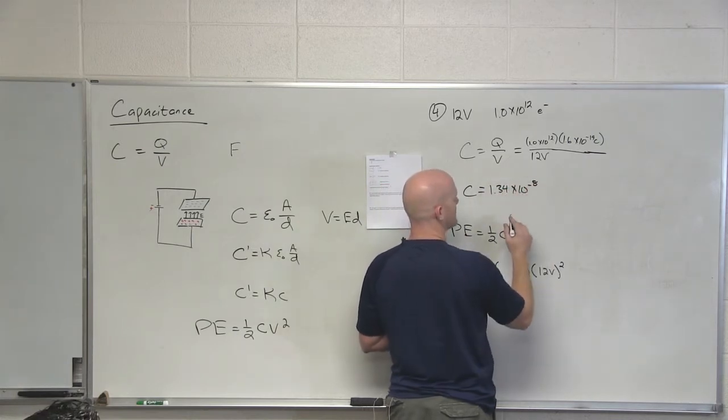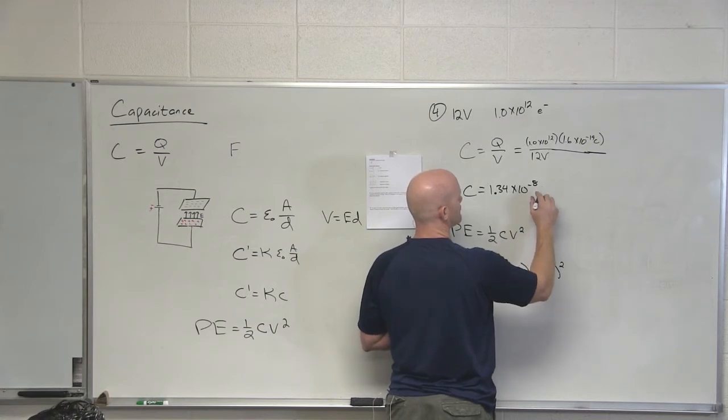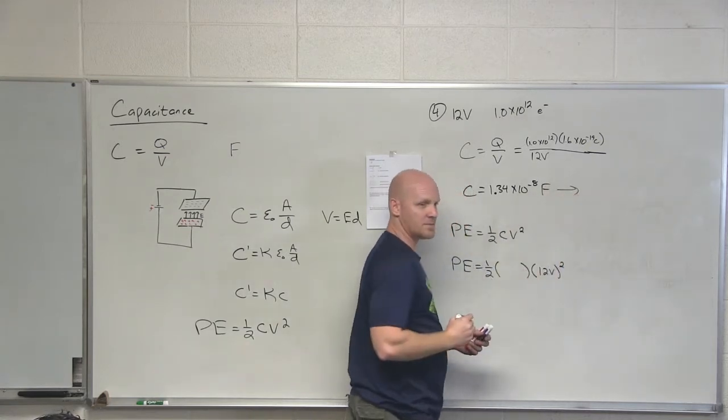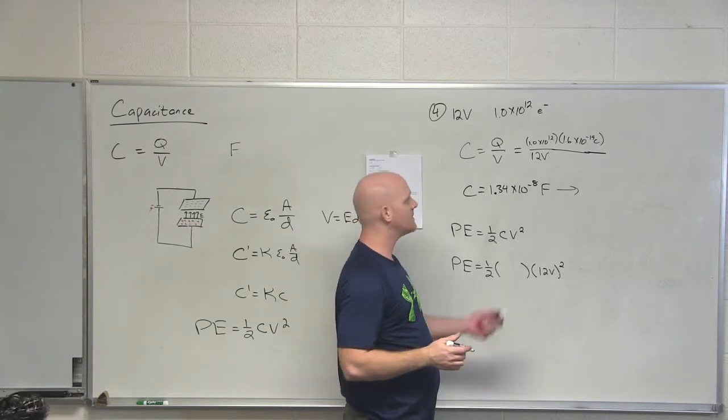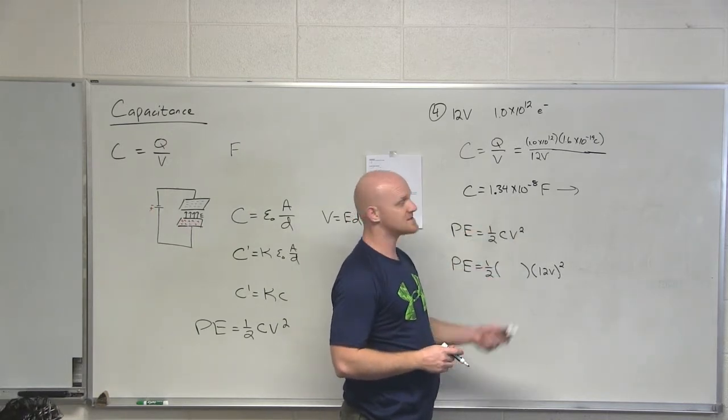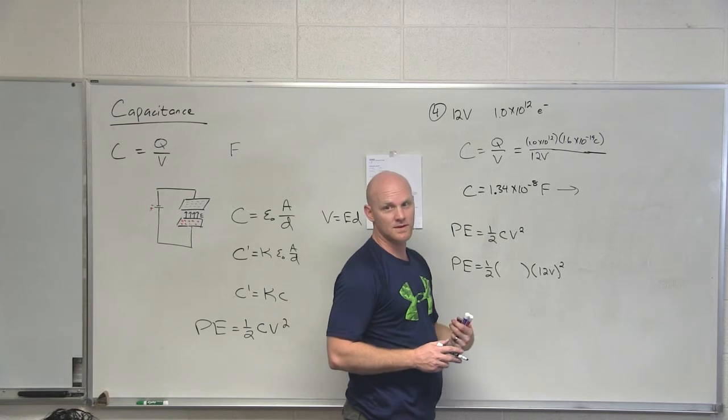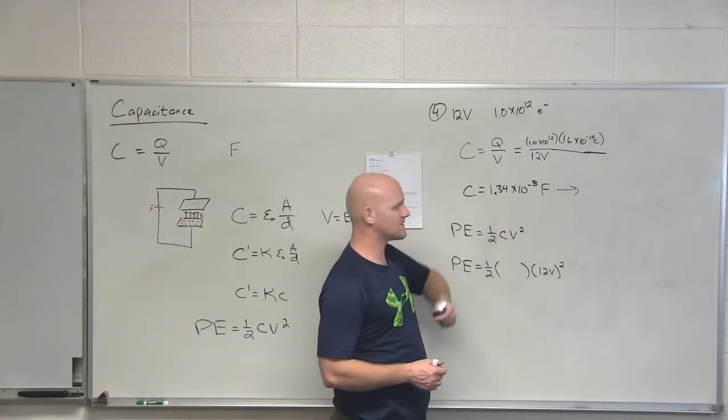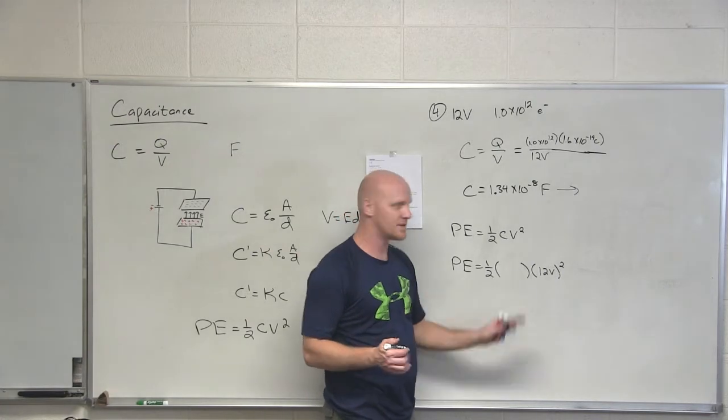What are the units on that? Farads. So sometimes because these can often be pretty small, just like coulombs can be pretty small, sometimes if you get a multiple choice test I might not give these in farads, I might give these in nanofarads or microfarads or something like that. So instead you might see this as like 13.4 nanofarads or something. I'm just gonna leave it as farads. I like it.